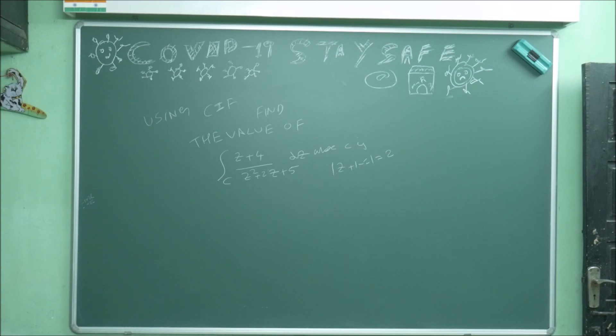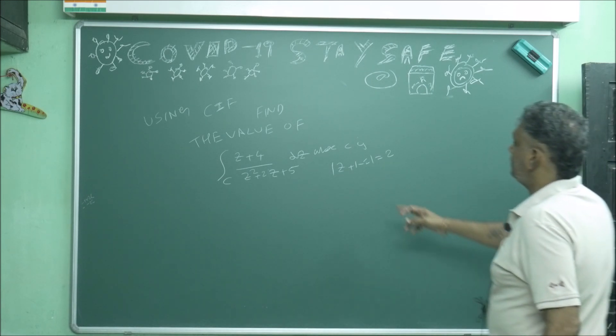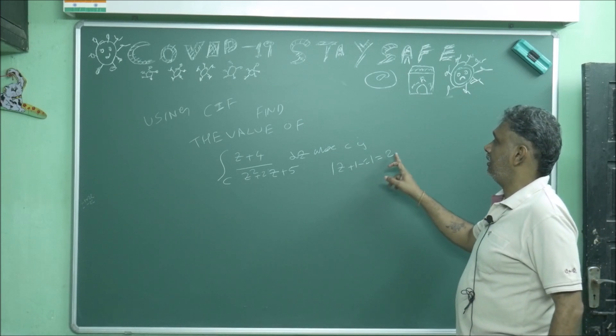Find the value of integral over C of (Z plus 4) divided by (Z squared plus 2Z plus 5) dZ, where C is |Z plus 1 plus i| equals 2. So my circle center lies at -1 + i where radius is 2.